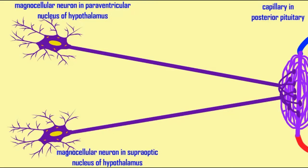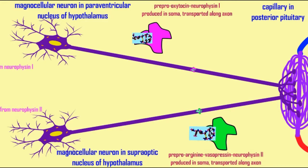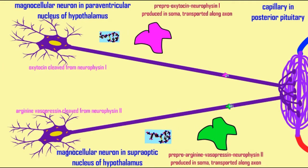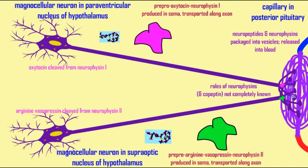Both of these neuropeptides are produced in the soma of the magnocellular neurons of the nuclei of the hypothalamus. But while they are being transported along the axons, they are cleaved from the large precursor molecules to produce oxytocin and the other half of the precursor neurophysin-1, or vasopressin and the other half of the precursor molecule neurophysin-2, in addition to a glycoprotein copeptin. These neuropeptides with the neurophysins are then packaged in vesicles in the synaptic knobs and released into the blood as hormones.